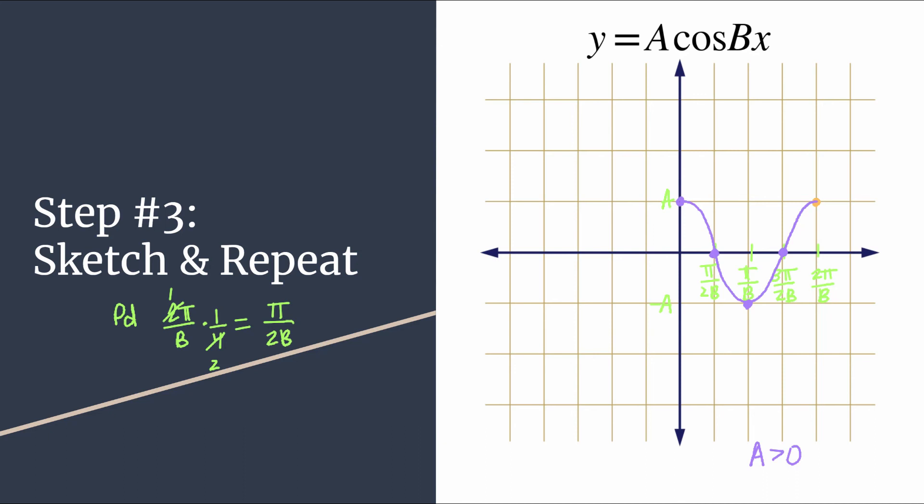Now, if you wanted to, you could go through and complete another cycle, label the scales, do all that sort of stuff. Basically, you're just repeating the pattern. So if you go four tick marks to the left of the origin, I won't label here, but you'll have max zero min zero. And then we pick up with the first cycle we graphed. So you could do this for as many cycles as you needed.